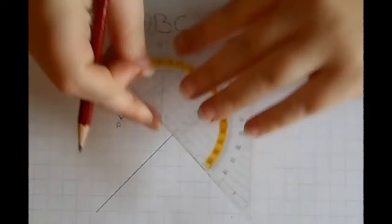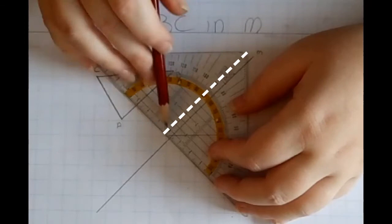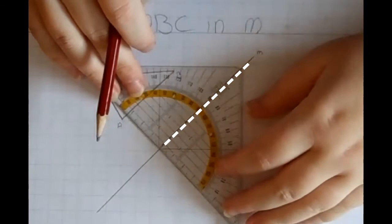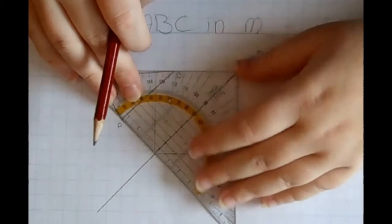The protractor triangle has a line right in the middle and I am going to put that line that you see right here in the middle of your protractor triangle on the mirror line to make sure my ruler line is perpendicular to the mirror line.